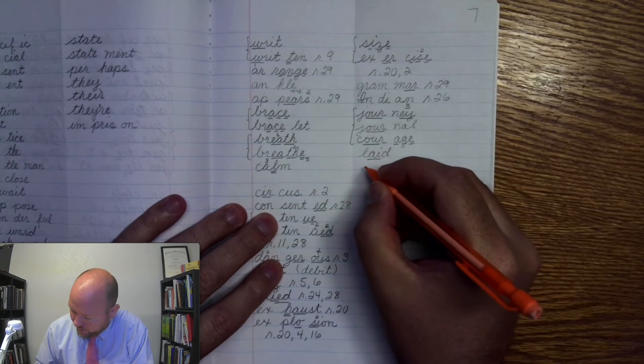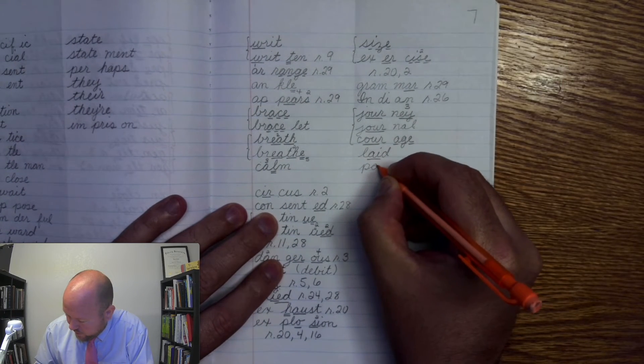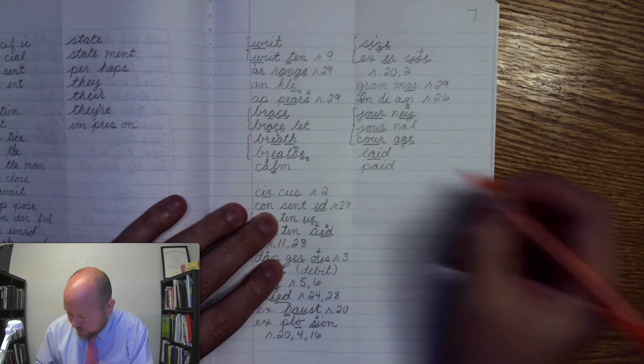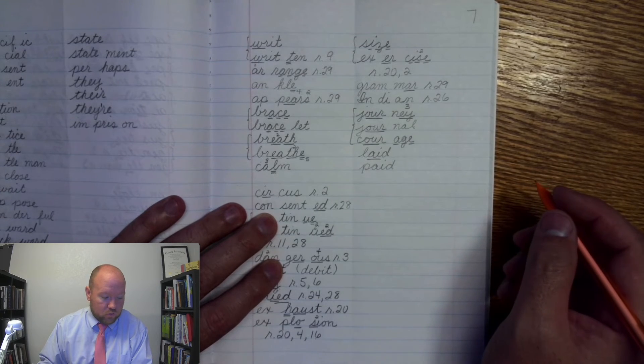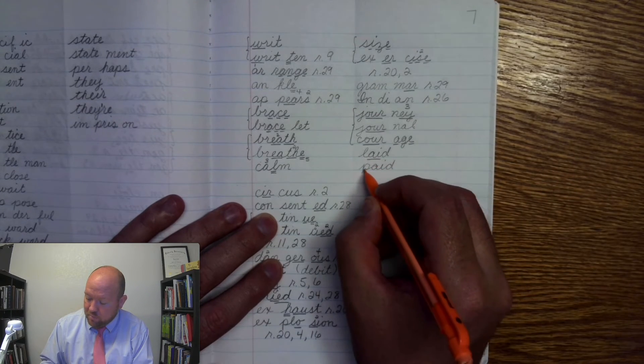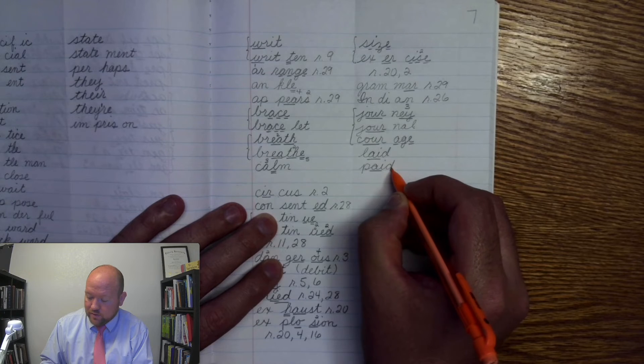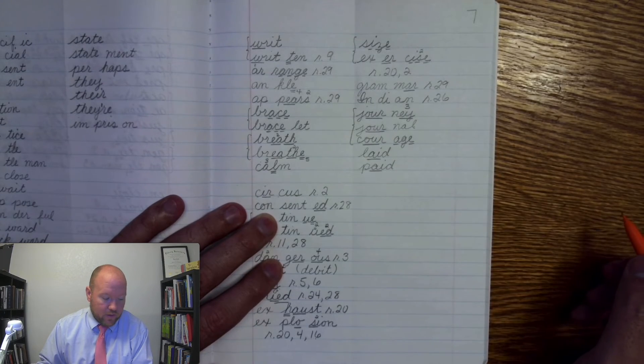So, we have paid. Puh-A-duh. Paid. Write it. Paid. Puh-A-duh. These are irregular because they don't follow the rule of adding E-D. Puh-A-once. Duh. Paid.